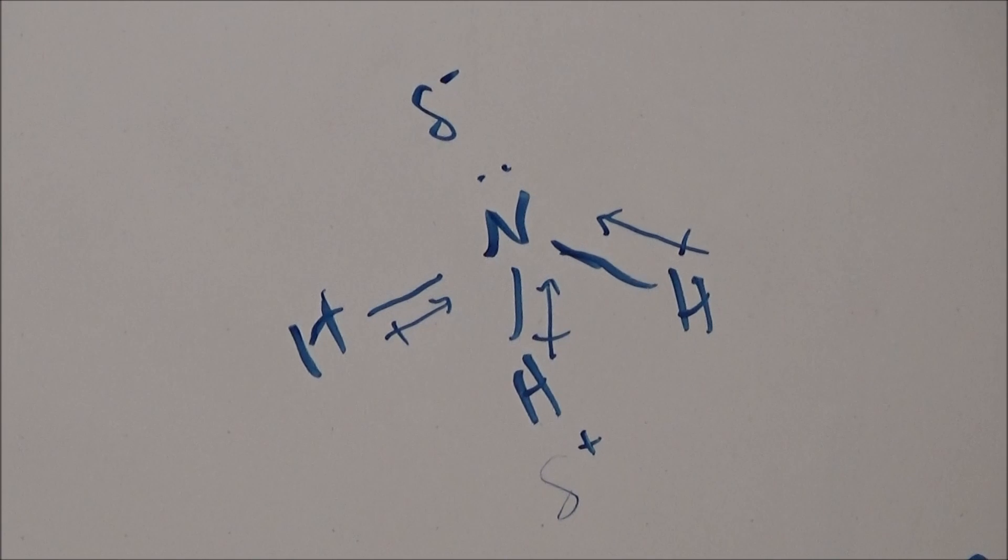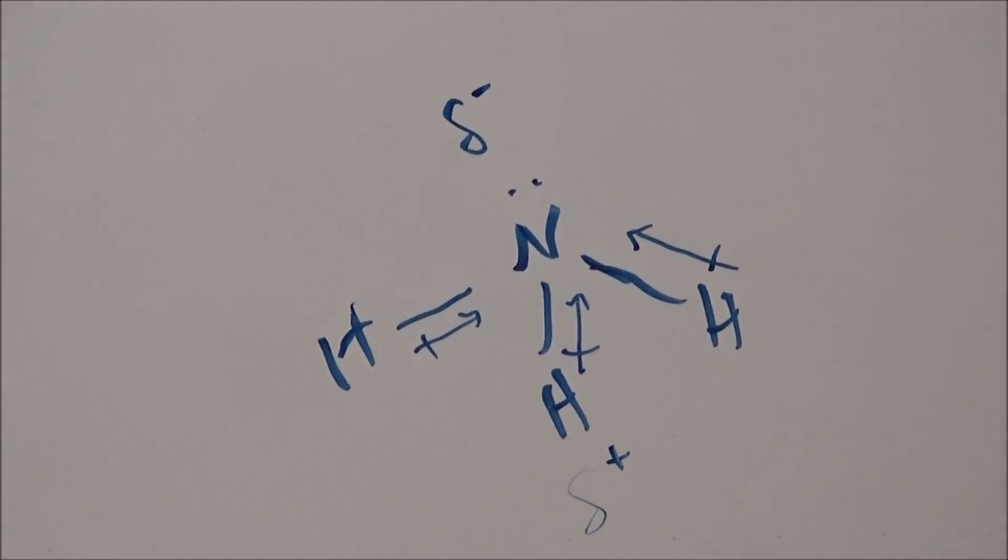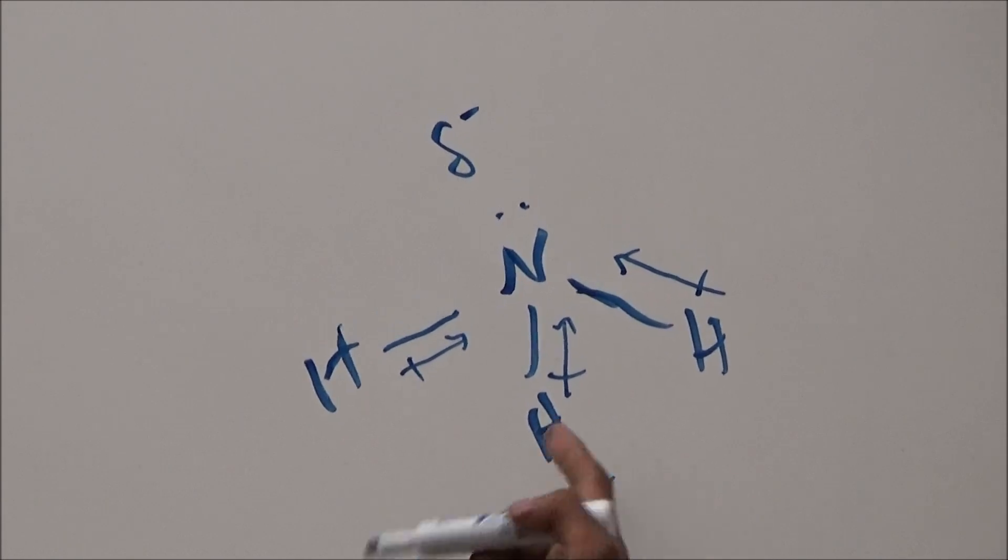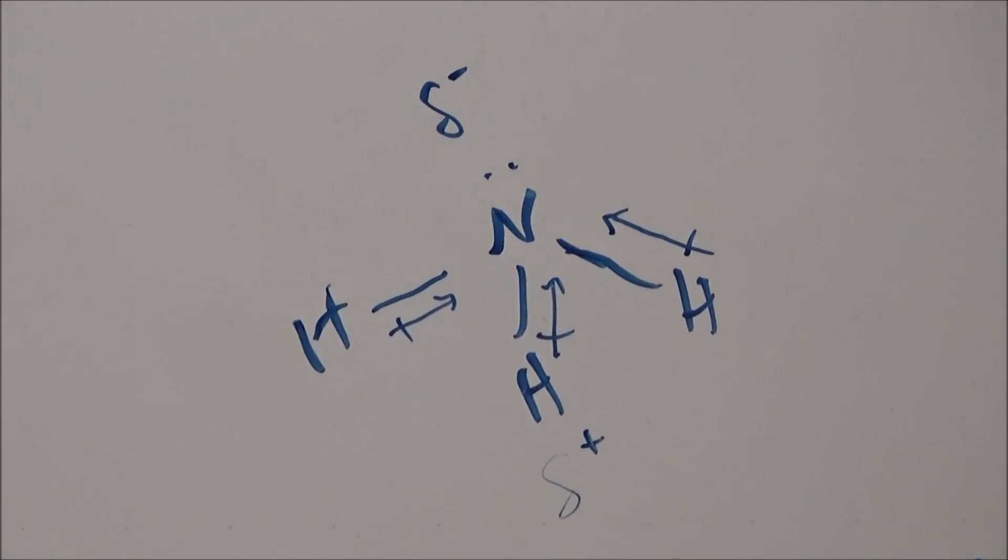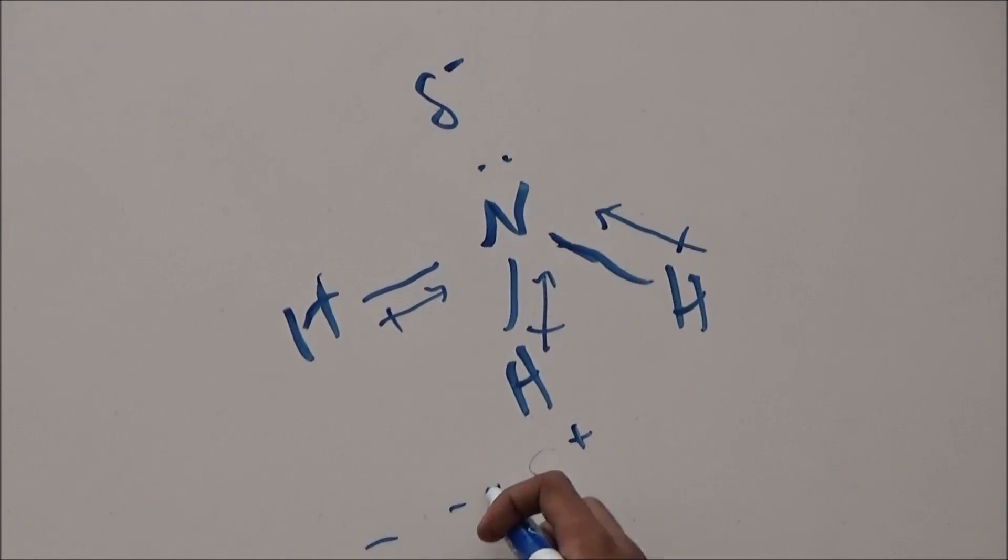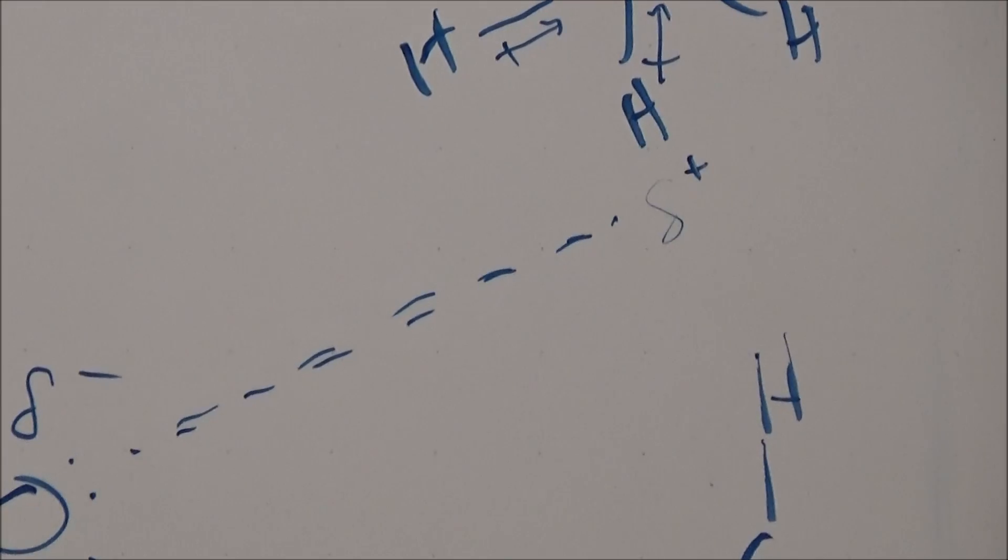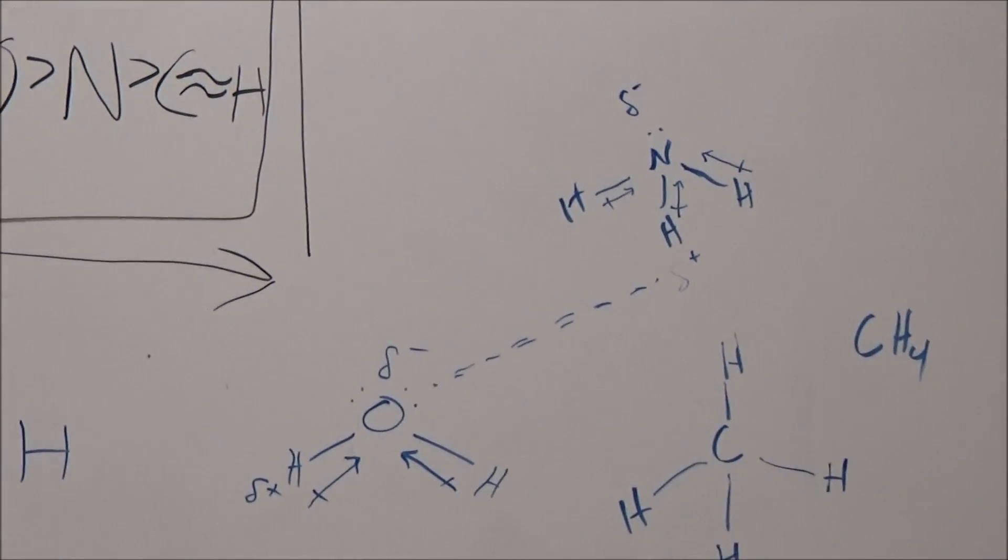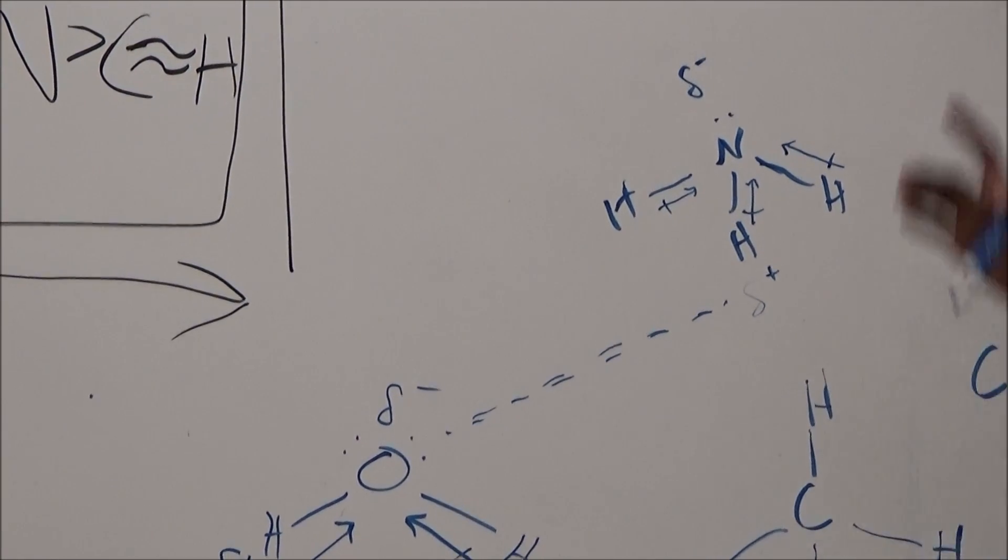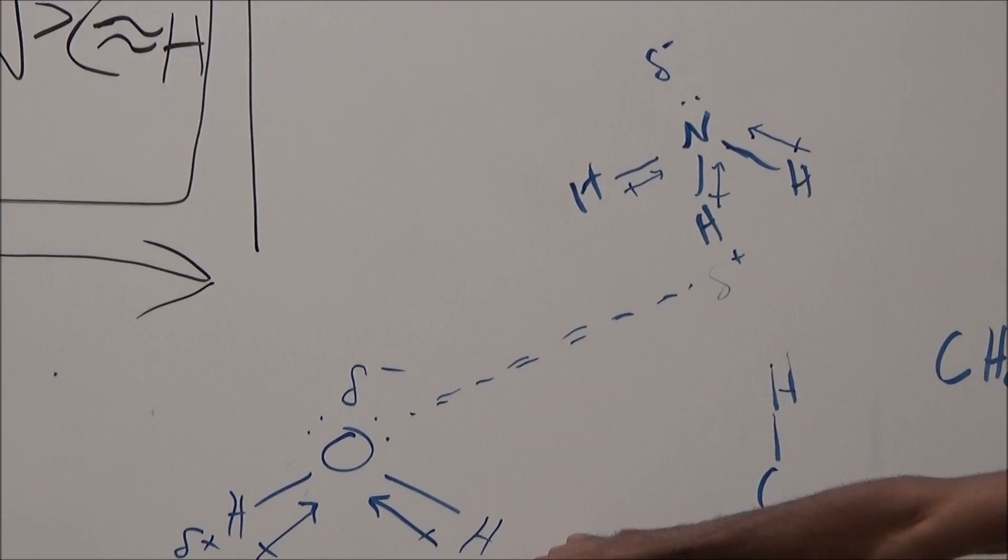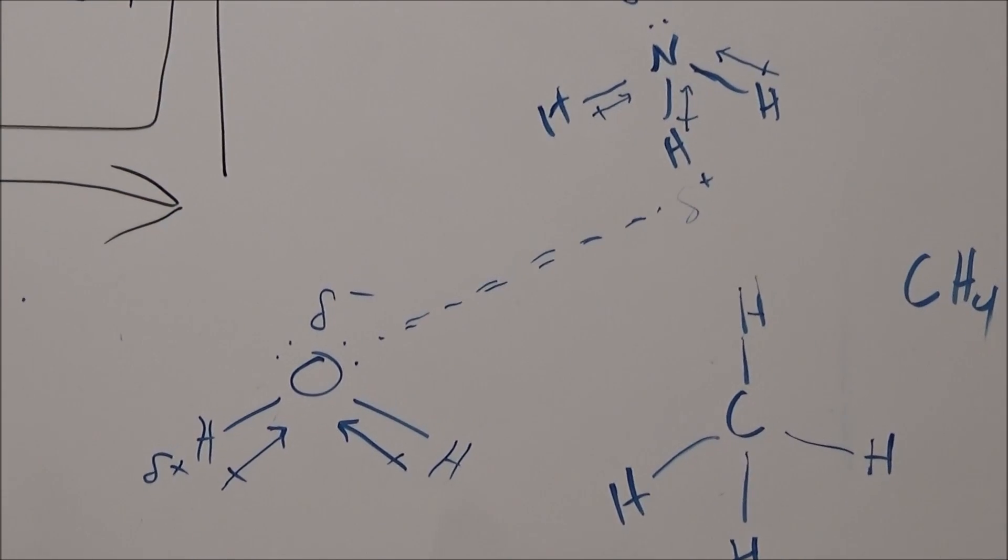Now, because this water molecule has a partial negative here and this ammonia has a partial positive here, this side of the ammonia is able to interact with this side of the water molecule because of that attraction. Right? And it's because of this attraction that ammonia is able to dissolve into water, or like dissolves like. The polarity of this and the polarity of this are alike, and therefore able to dissolve.